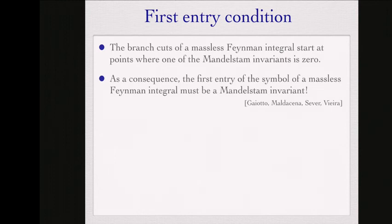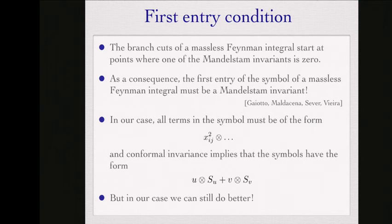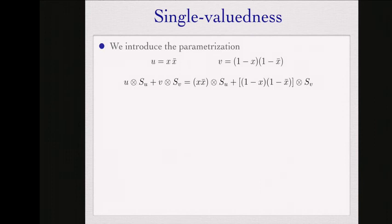These are final integrals so they have precise cuts; the cuts must be at points where Mandelstam invariants vanish. In this case Mandelstam invariants means distances between two points, and by conformal invariance that means the first entry can only be a cross ratio. Remembering the definition of u and v, that means the first entries must be combinations of x times x-bar and 1 minus x times 1 minus x-bar.